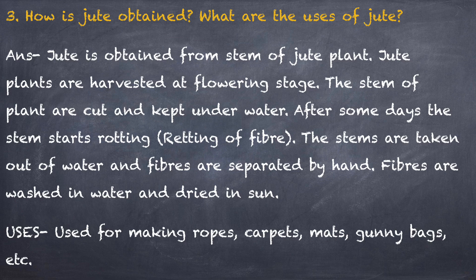The next question is: how is jute obtained? Jute is obtained from the stem of the jute plant. Jute plants are harvested at their flowering stage. The stems of the plant are cut and kept under water for many days. After some days, the stem starts rotting and this process is called retting of fiber. The stems are then taken out of water and fibers are separated by hand. Fibers are washed in water after that and dried in sun.